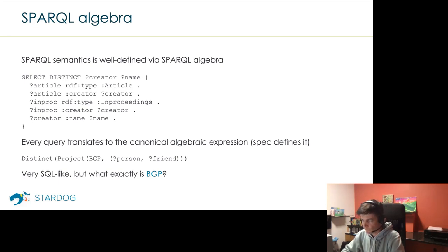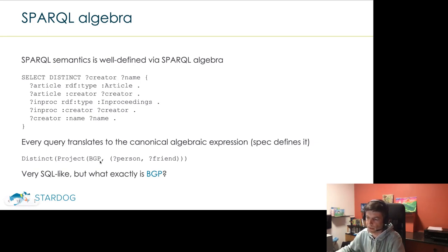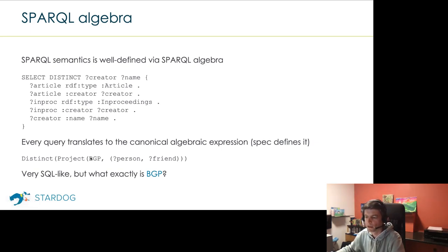SPARQL semantics are well-defined via the SPARQL algebra in a very SQL-like way. For every query, the spec defines a canonical algebraic expression. In this case there would be a basic graph pattern, then projection of two variables, then a distinct filter on top. It's evaluated inside-out: the deepest nested sub-expressions are evaluated first. The rest of this talk will really be about the BGP — basic graph patterns. The rest is processed much like SQL.